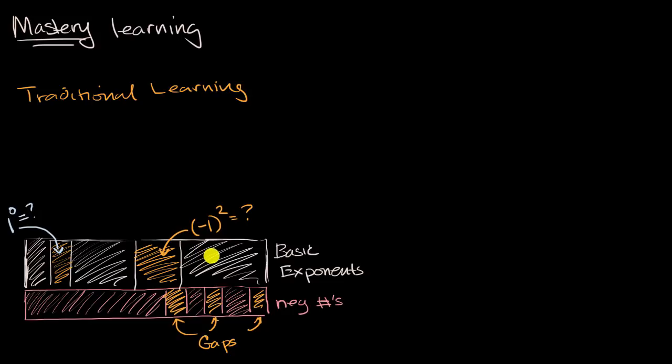The amount of time is what's fixed, and what's variable is how well the students understand it. A, B, C, D, or F. And then the next concept, we are building on top of everything that we've learned so far. Let's say it is negative exponents. So I think you can see where this is going.